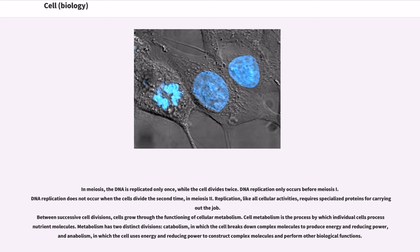Replication, like all cellular activities, requires specialized proteins for carrying out the job. Between successive cell divisions, cells grow through the functioning of cellular metabolism.